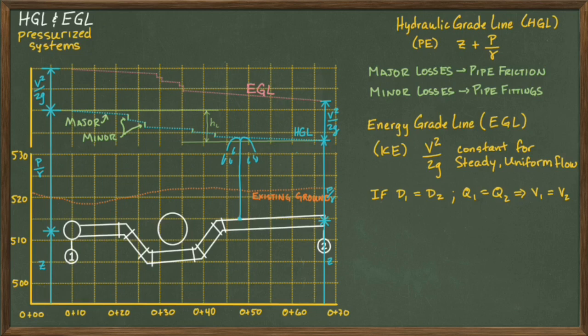The EGL can be similarly visualized if we were to stick a tube into the middle of the pipeline where the velocity of the water is flowing. And this will result in water squirting higher in the air up to the EGL line.